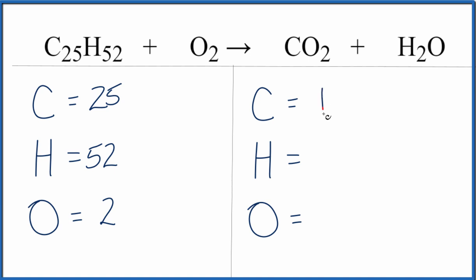Over on the product side, we have 1 carbon, 2 hydrogen, and oxygen—be careful, we have 2. But we also need to count this 1 here, so we have 3 of those.